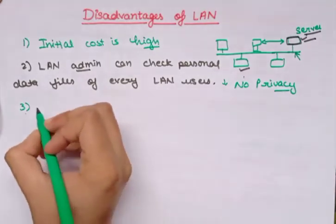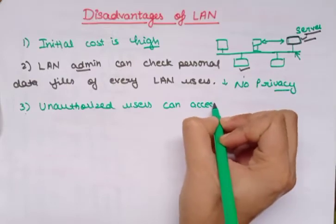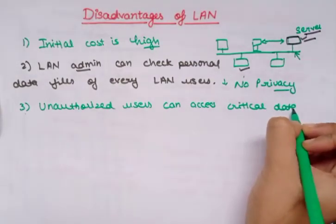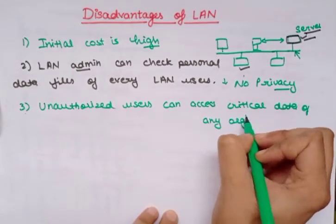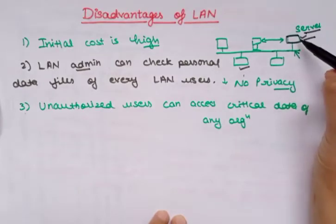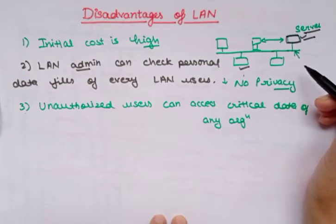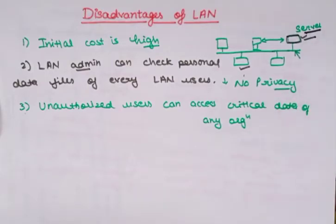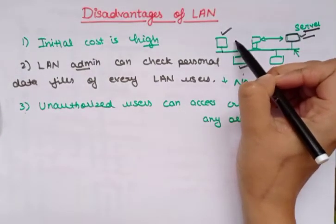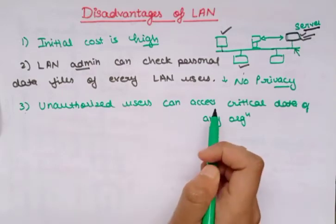The third disadvantage is that unauthorized users can access critical data of an organization in case the LAN admin is not able to secure the centralized data repository. Agar humara LAN admin ne server ko secure nahi kiya hua hai, to anyone can easily access the data. An end user could log in to the server system and crack or access another user's data, running it on their own system.